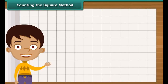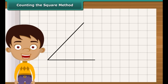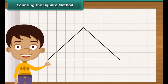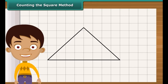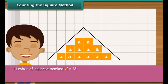Now let us calculate area with the help of a simple method — the counting the squares method. Draw the triangle on squared paper, where each square has a side of one centimeter. First, count the complete squares enclosed by the triangle and mark each of these squares as A. Then count the squares whose more than half part is enclosed by the triangle and mark these as B.